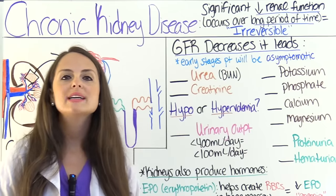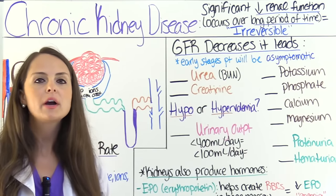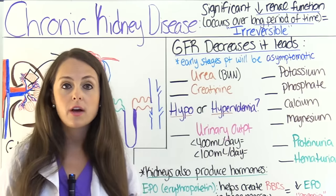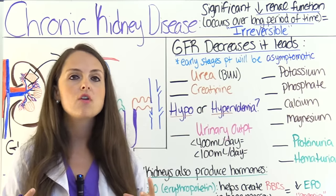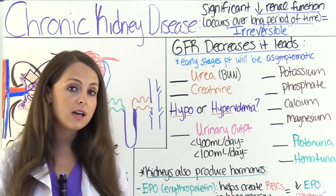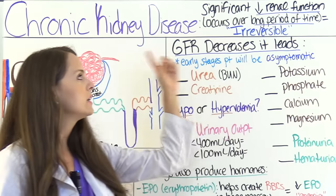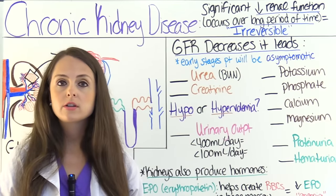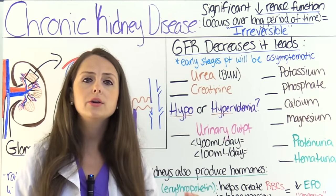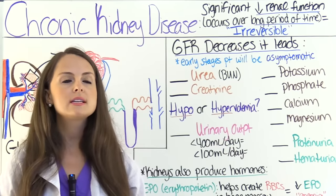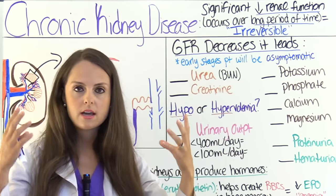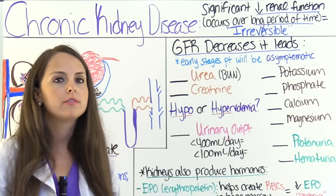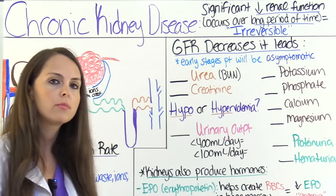Let's start out talking about what chronic kidney disease is. It is where you have a significant decrease in renal function, and this happens over a long period of time and it is irreversible. That is the complete opposite of acute kidney injury, which was a sudden decrease in renal function that tends to be reversible if they can figure out the cause and treat it appropriately.